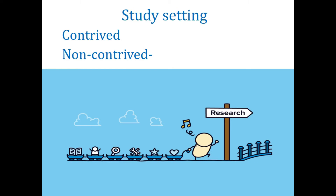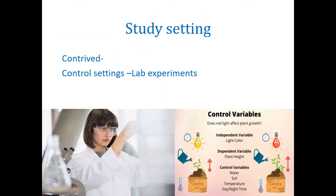In contrived and non-contrived study, the researcher starts by describing and identifying the research setting — the area and environment where the researcher conducts research and collects data. Contrived study basically describes a controlled setting environment where the researcher mostly conducts the study. This is typically done in a controlled lab environment.